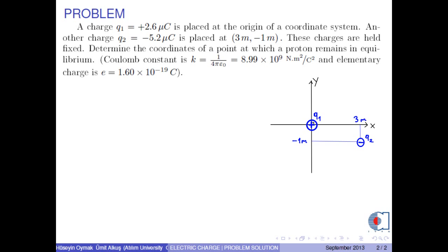These charges are held fixed. Determine the coordinates of a point at which a proton remains in equilibrium. The Coulomb constant is K = 8.99 × 10⁹ N·m²/C², and the elementary charge is e = 1.6 × 10⁻¹⁹ coulombs.